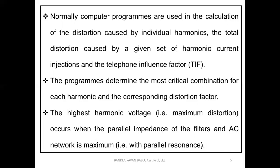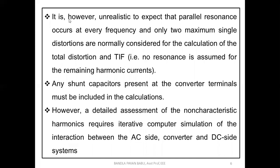This extreme case is expected when parallel resonance occurs. However, it is unrealistic to expect parallel resonance at every frequency — only two maximum single distortions are normally considered for calculating total distortion and TIF; no resonance is assumed for remaining currents. Practically, we cannot guarantee that harmonics will always reach a fixed maximum value, so we must consider additional worst-case values as well, similar to allowing margins beyond six times short circuit current.